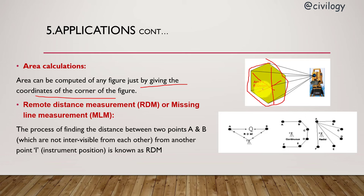Remote distance measurements (RDM): The process of finding the distance between two points A and B. If there is any obstacle between them, you can still find the distance. This is known as RDM - Remote Distance Measurement.